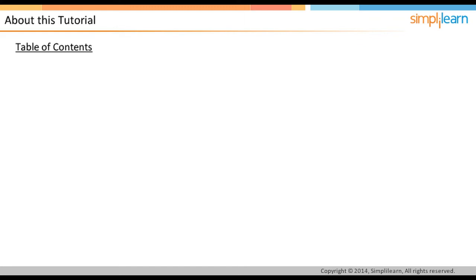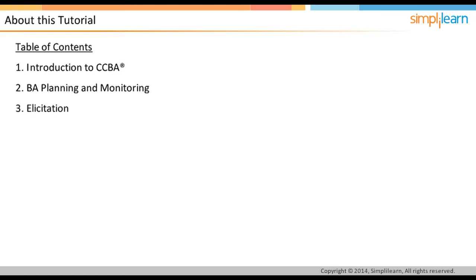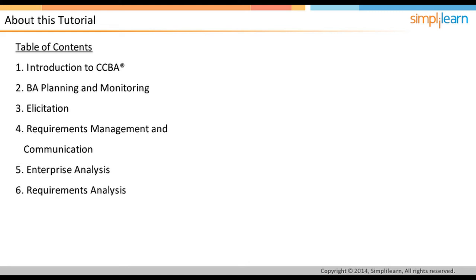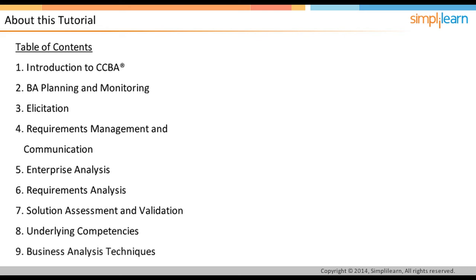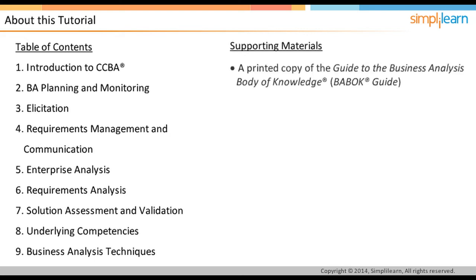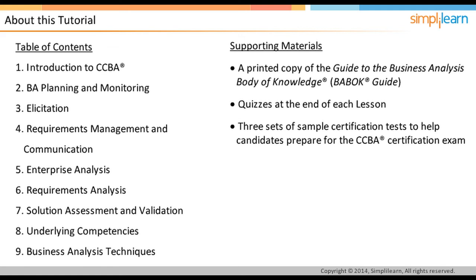This course is categorized into nine lessons. The first lesson will introduce us to CCBA. In the second lesson, we will find out how to perform BA planning and monitoring. Elicitation is dealt with in detail in the third lesson. The fourth lesson is on requirements management and communication. Enterprise analysis and requirements analysis cover the fifth and sixth lessons respectively. We will then look into solution assessment and validation. Lesson 8 discusses underlying competencies. Finally, a review of business analysis techniques is in Lesson 9. A copy of the BABOK guide and quizzes are provided at the end of each lesson. Additionally, there are two sets of test papers which will help candidates in preparing for the certification exam.